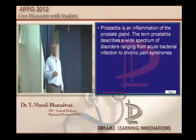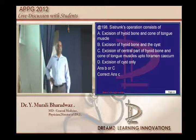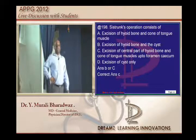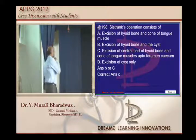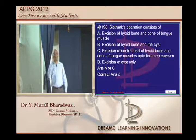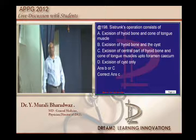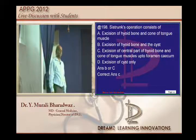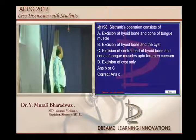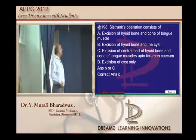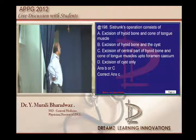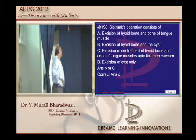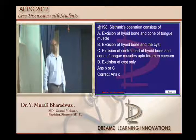Once more about the Sistrunk procedure — between B and C, let us see. The original Sistrunk description was excision of the central part of the hyoid and a cone of tongue muscles up to the foramen cecum, removing the entire tract, including not only the cysts but also the path tract.